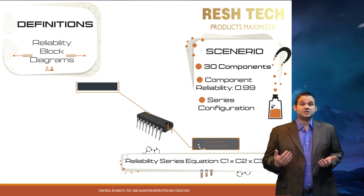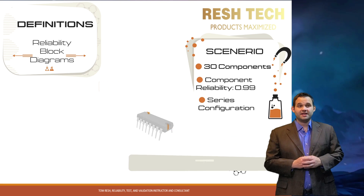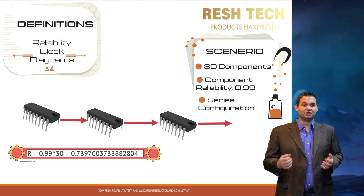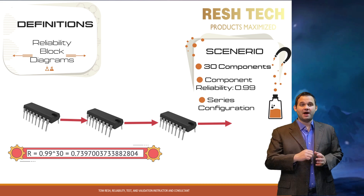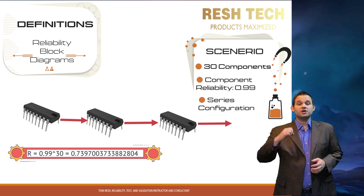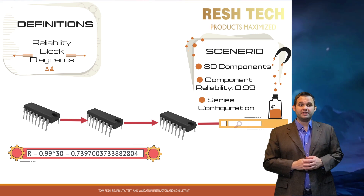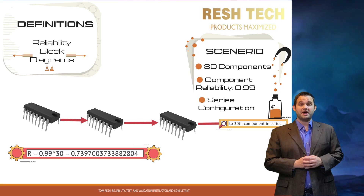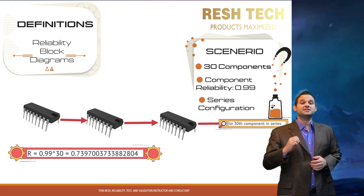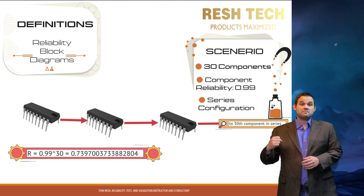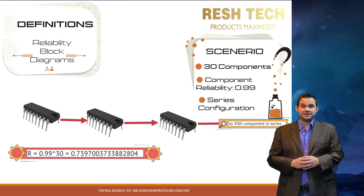Since reliability is the same for all components, we can take 0.99 to the 30th power. Taking 0.99 to the 30th power, you get 0.7397. Your system is not very reliable. Don't take this system into production as it is currently designed — back to the drawing board with this design.